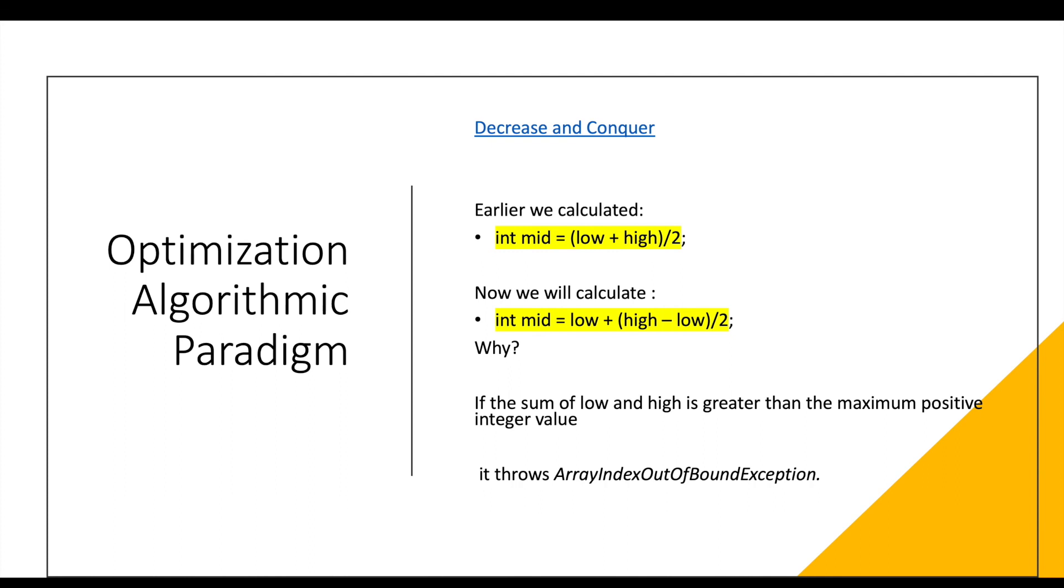Hence it is advised to not calculate mid by simply adding the low plus high, but rather use the second formula in which we are doing a high minus low. We are taking the difference of that. Then we are dividing that by 2 and then adding this to the low. At any given point in time, the integer data type, which is int mid, is not going to store anything which is greater than the maximum positive value of integer. You guys can also try it out by using any of the practice links that I have given in the description. If you see that if you use the earlier formula, you might see that some of the test cases are failing, but the moment you change the formula to the second one, the test cases will pass.